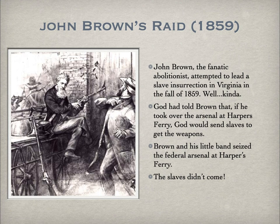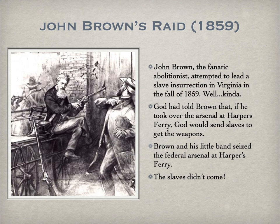In 1859, John Brown, the fanatic abolitionist from Kansas, attempted to lead a slavery insurrection in Virginia. God had told Brown that if he took over the arsenal at Harper's Ferry, God would send slaves to get the weapons and spark a rebellion against slavery all over the South. Brown and his little band seized the federal arsenal at Harper's Ferry and waited for the slaves to come and pick up the weapons. The slaves didn't come.